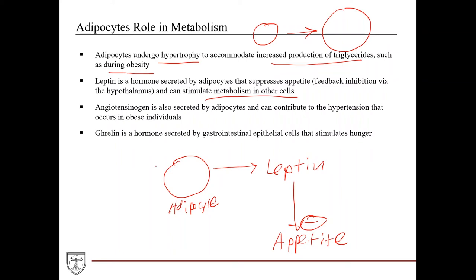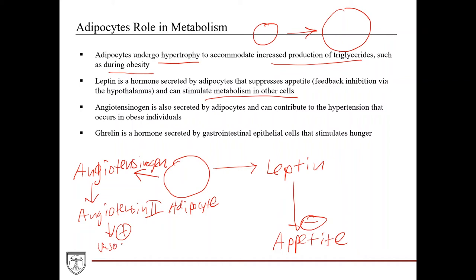Adipocytes also secrete a molecule known as angiotensinogen, which is eventually converted into angiotensin II, which stimulates vasoconstriction in blood vessels. That can actually lead to hypertension, especially if you're secreting a lot of it, such as during obesity. The last hormone to mention is ghrelin, which is secreted by the GI tract and is sort of the opposite of leptin — it actually stimulates appetite or hunger.